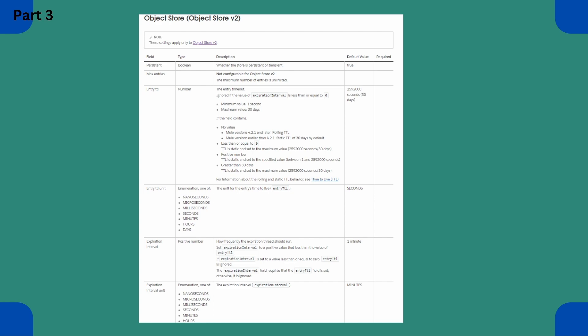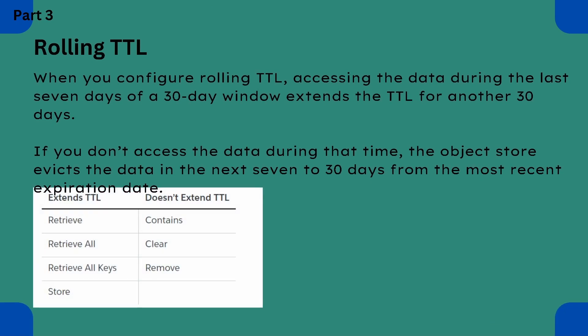Let me refresh the rolling TTL concept. When we configure rolling TTL, accessing the data during the last 7 days of a 30-day window extends the TTL for another 30 days. So if you access those key values in the last 7 days of a 30-day window, that TTL will be extended for another 30 days. That is rolling TTL basically.